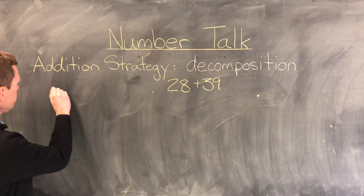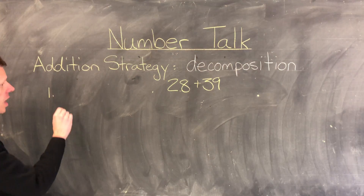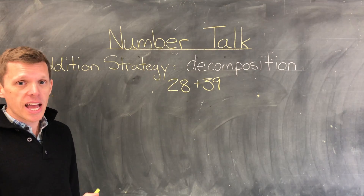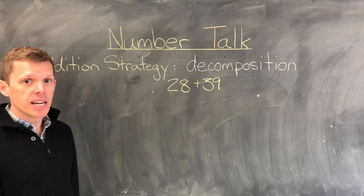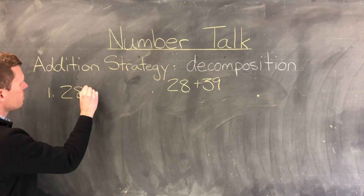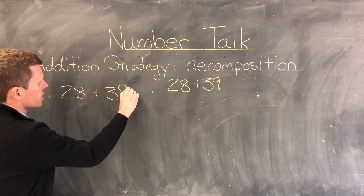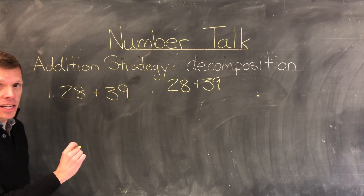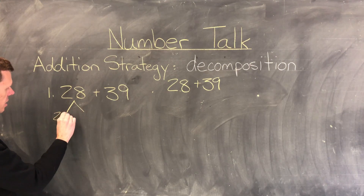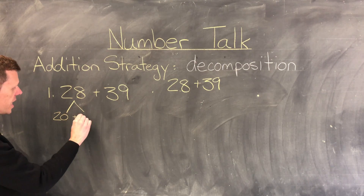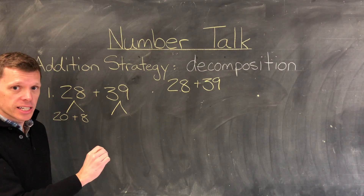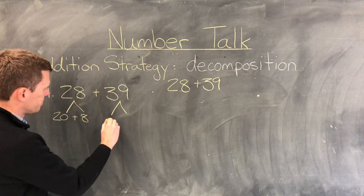In our first example I'm going to decompose both 28 and 39 into their parts. So 28 plus 39 — I can decompose 28 into 20 plus 8, and I can decompose 39 into 30 plus 9.